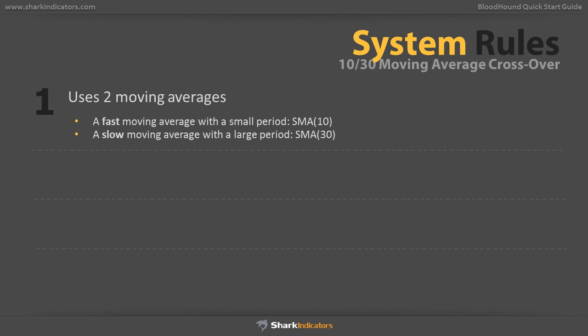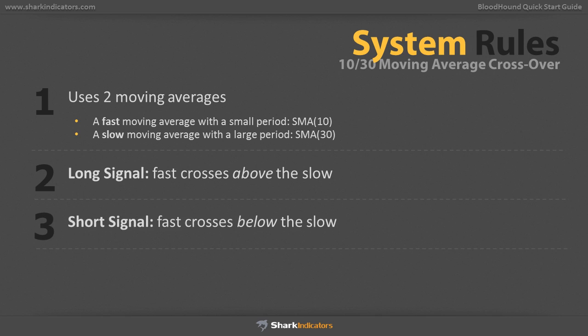We want to capture the moment it crosses sides and ride the current trend. Thus, there are only two signal rules: go long when the fast crosses above the slow, and vice versa.